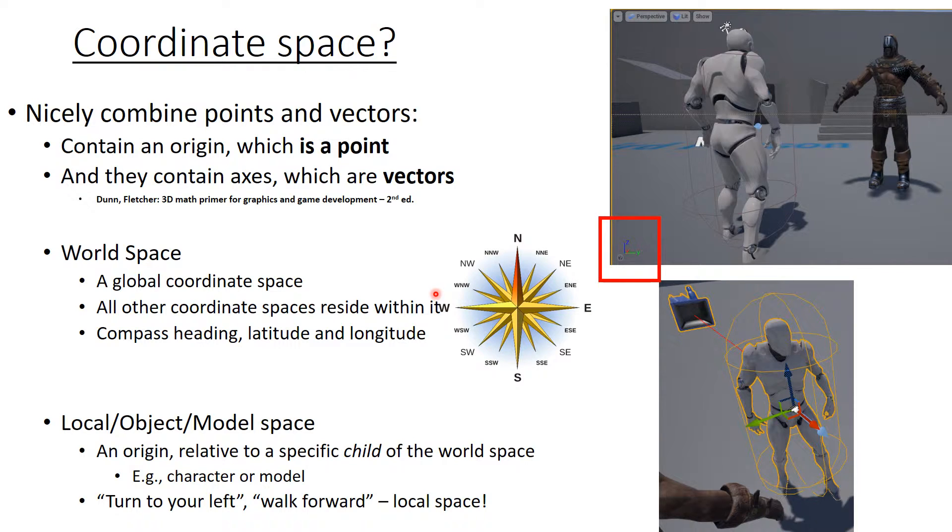In terms of the direction of an individual object, well, that is called local space. So for example, here, the man is now being represented using his local transform. Here is his local z-axis that I make him move forward. Here is the local y-axis that I make him move up or down.